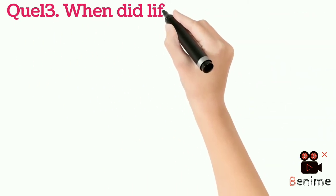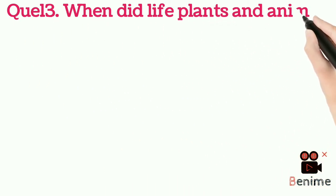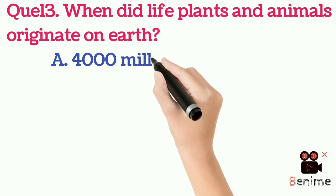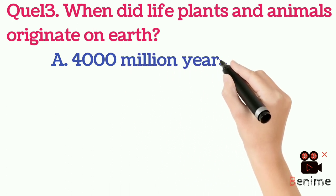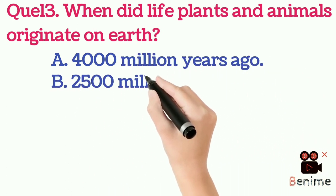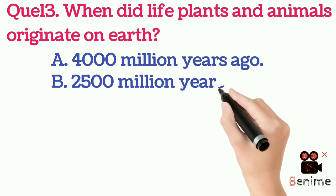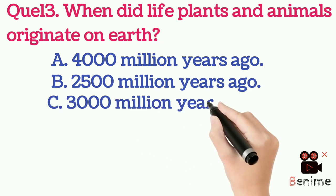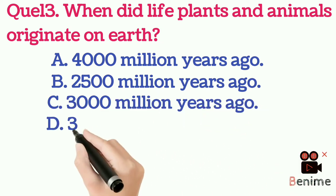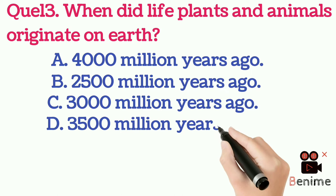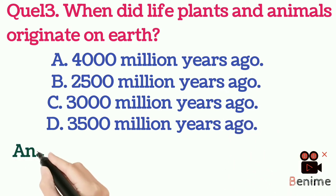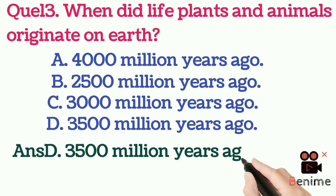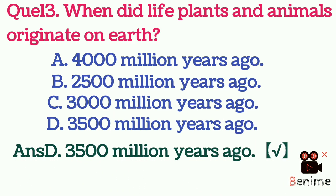Question 13: When did life — plants and animals — originate on Earth? A. 4,000 million years ago. B. 2,500 million years ago. C. 3,000 million years ago. D. 3,500 million years ago. Answer D: 3,500 million years ago.